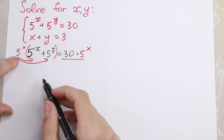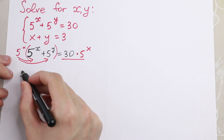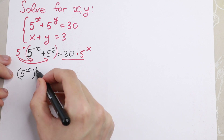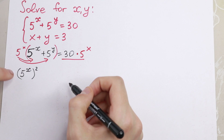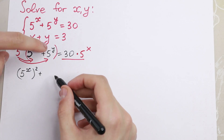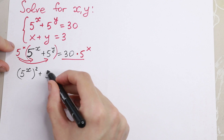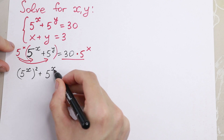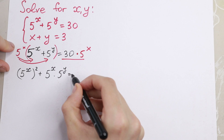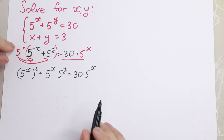Multiplying 5 to the power x times 5 to the power x, we will have 5 to the power x squared. Two same elements multiplied by each other give us x squared. Plus 5 to the power x times 5 to the power y, equal to 30 times 5 to the power x.